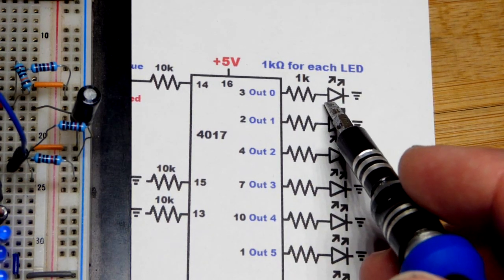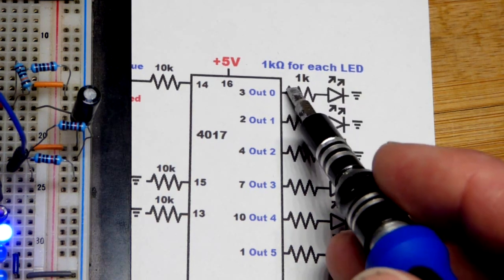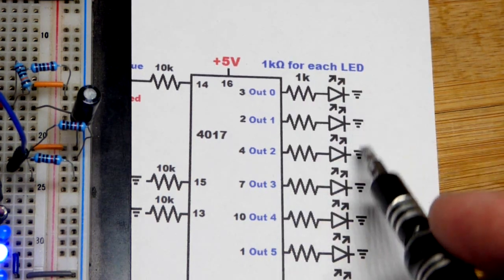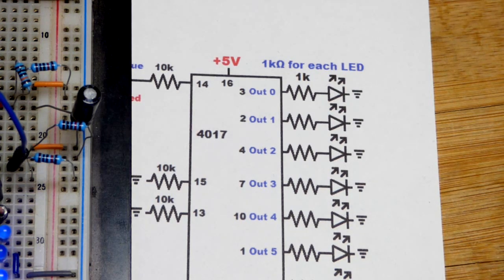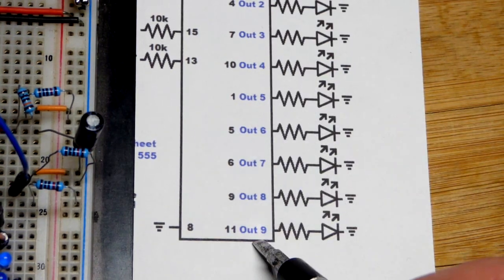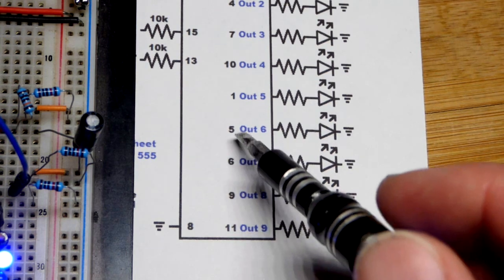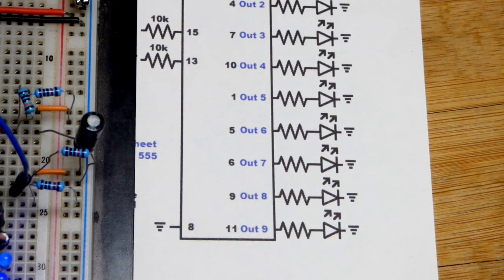Other people I see, they put the anode of the LED directly to the output and they tie together all the cathodes to one resistor there. But I didn't do that. And just jumping down, you can see we work our way down to output number nine. Again, they're not in order when it comes to the pins. It's a bit annoying, but it is what it is.